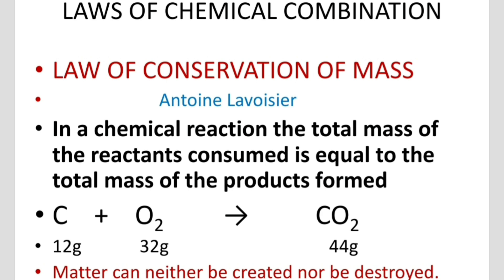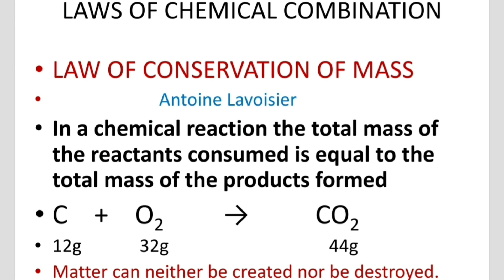For example, in the reaction C + O₂ → CO₂, the atomic mass of carbon is 12 grams and the mass of 2 oxygen atoms is 32 grams. So the total mass of reactants is 12 + 32 = 44 grams.